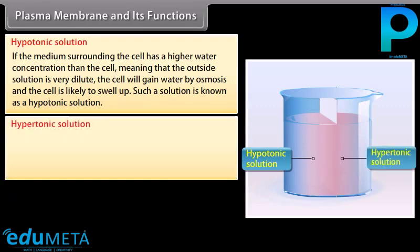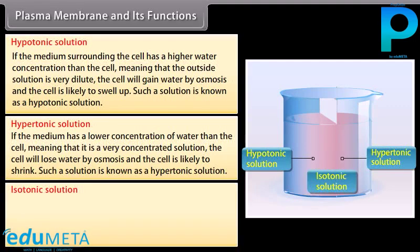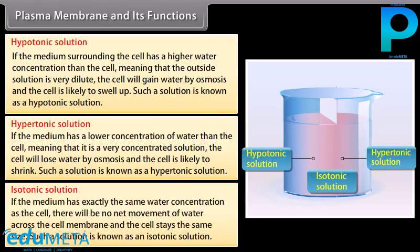Hypertonic solution: If the medium has a low concentration of water compared to the cell — meaning it is a very concentrated solution — the cell will lose water by osmosis and is likely to shrink. Such a solution is known as a hypertonic solution. Isotonic solution: If the medium has exactly the same water concentration as the cell, there will be no net movement of water across the cell membrane and the cell stays the same size. Such a solution is known as an isotonic solution.